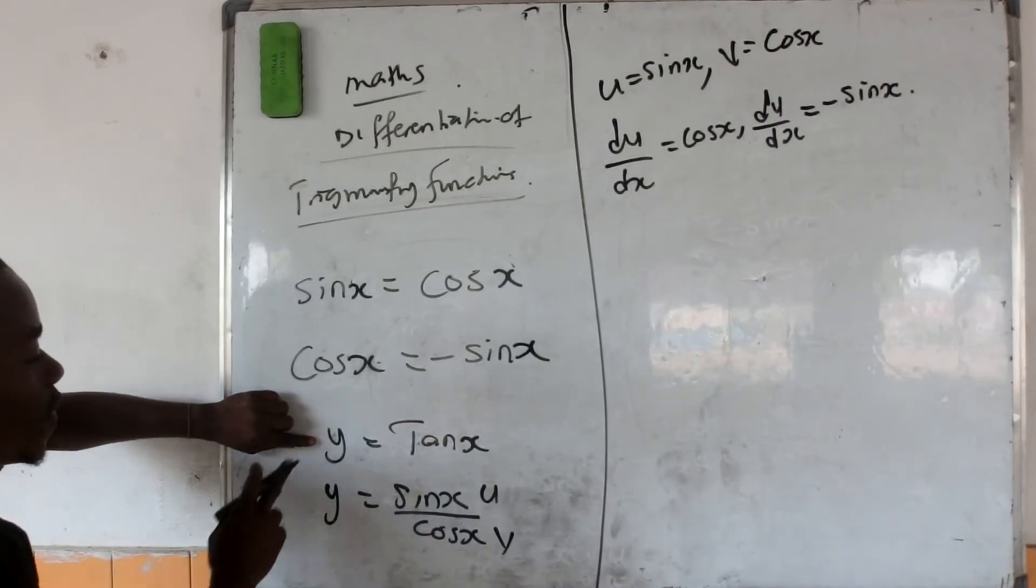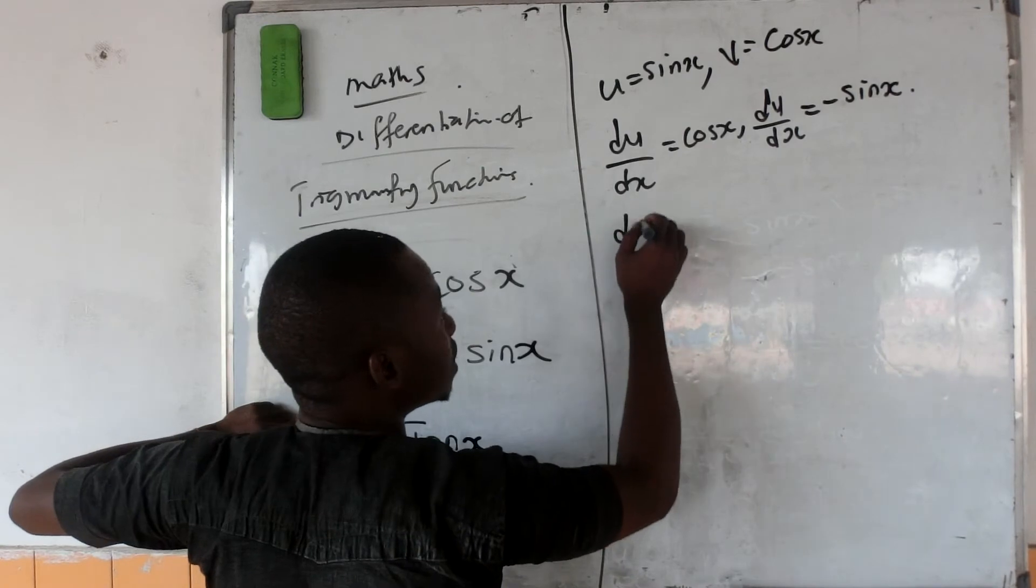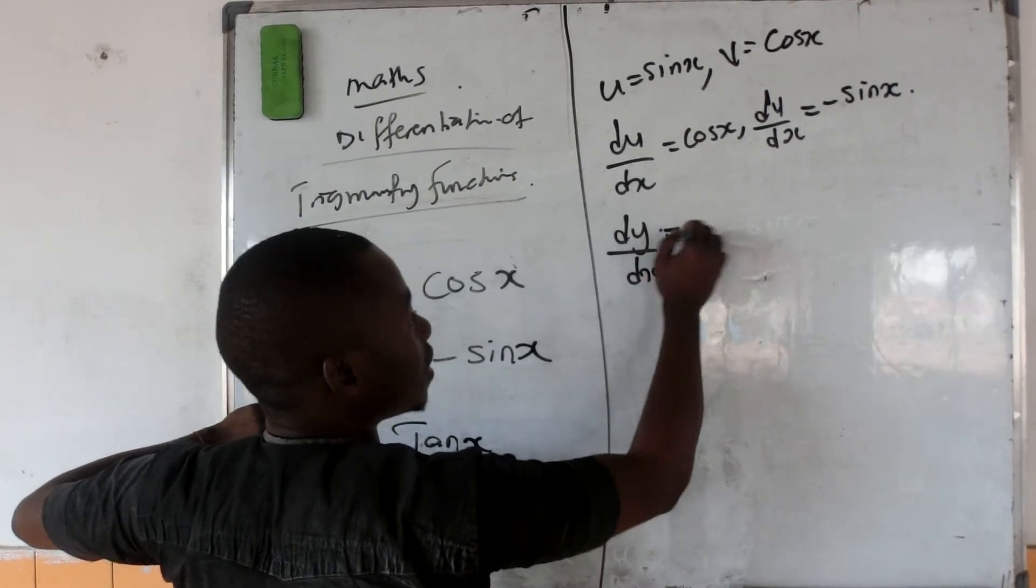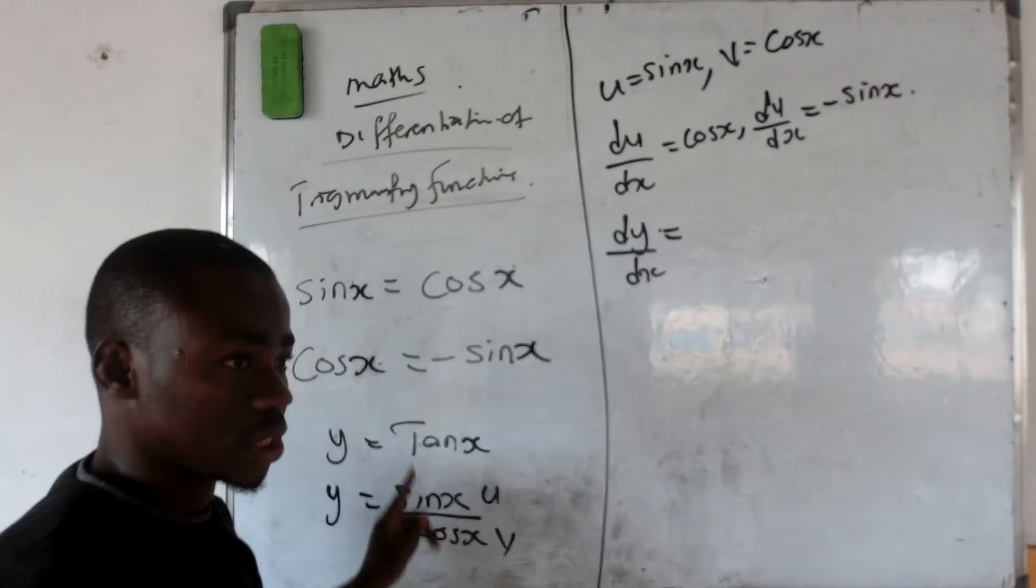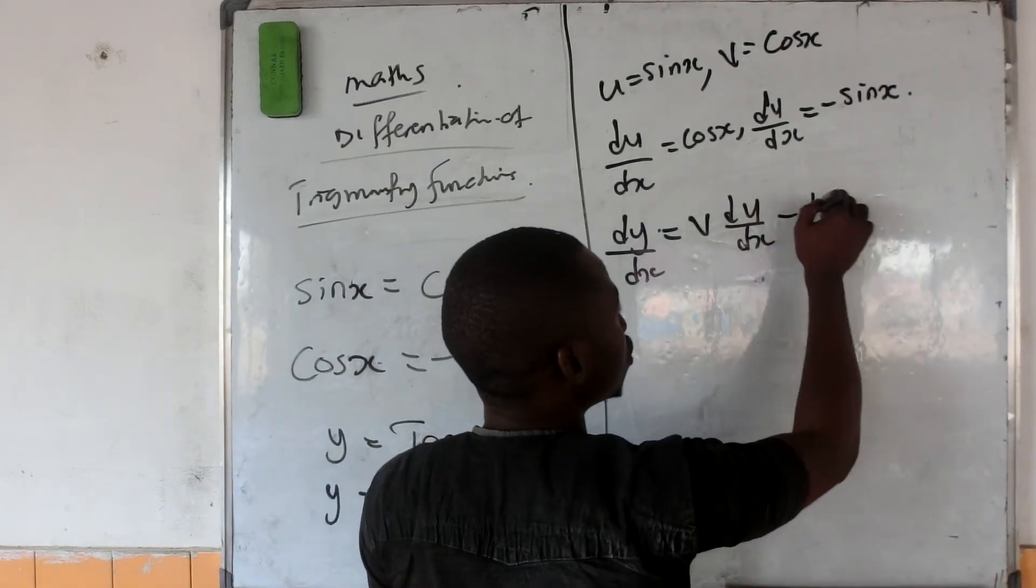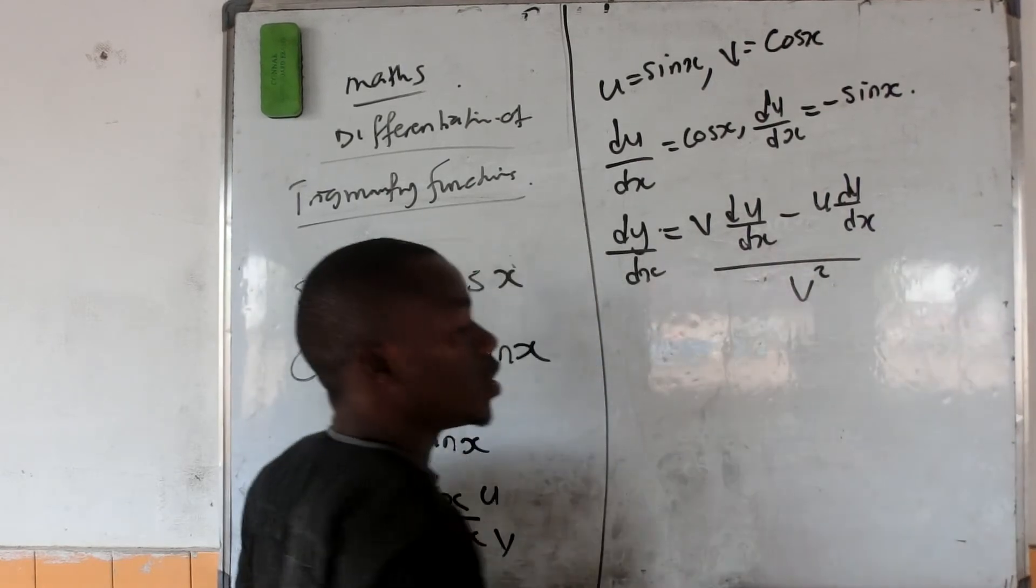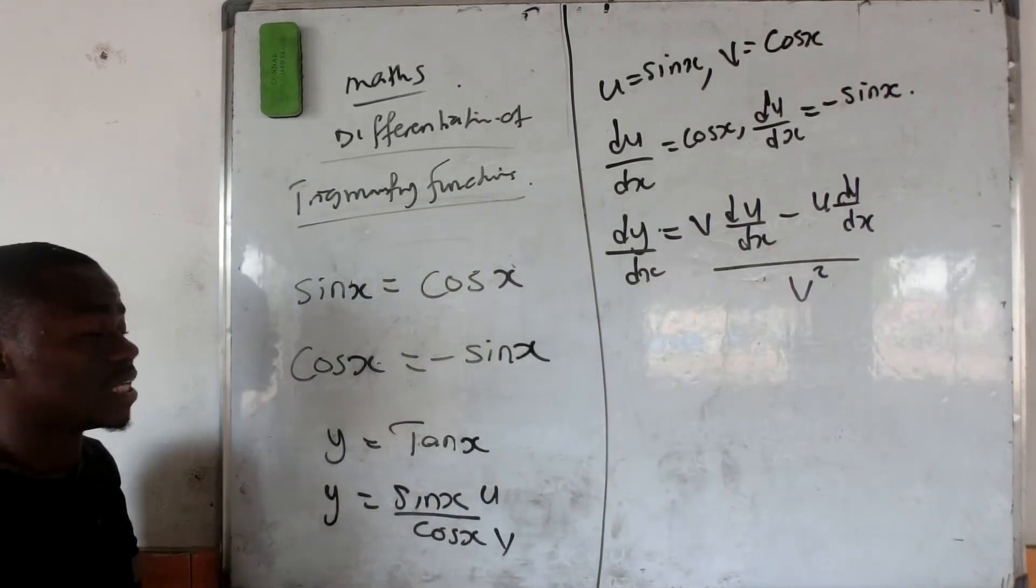And now, if we are putting y equal to tan x, what is the derivative of y, that is dy/dx. For a quotient, it will be equal to v(du/dx) minus u(dv/dx), all over v squared. So that is the formula to calculate any quotient with differentiation.